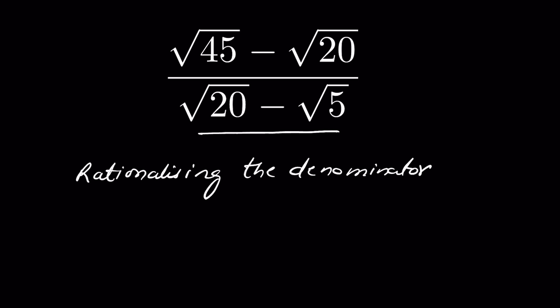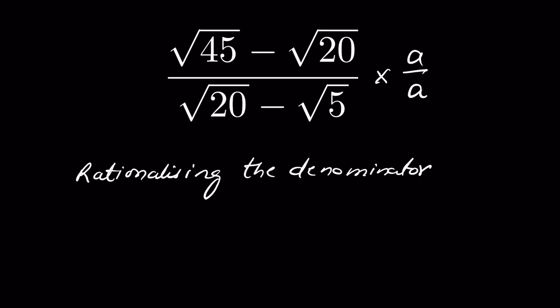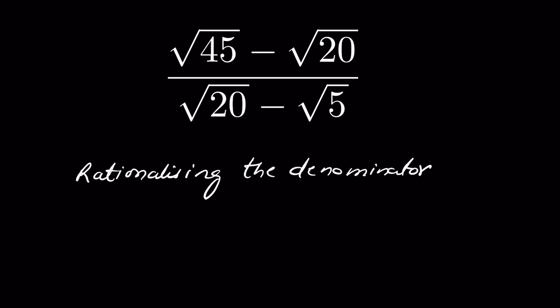To rationalize it, we multiply and divide by the conjugate of the denominator. If we multiply by 1 there is no change — multiplying any number by 1 is the same. We can write 1 as a upon a, so we multiply and divide by the same number so that the question doesn't change and the denominator becomes a real number.